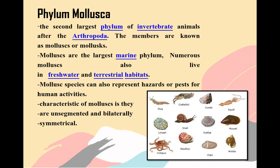The third type of phylum is Phylum Mollusca, the second largest phylum of invertebrate animals after the Arthropoda. The members are known as mollusks. Mollusks are the largest marine phylum. Numerous mollusks also live in freshwater and terrestrial habitats such as forests, grasslands, deserts, shorelines, and wetlands. Mollusk species can also represent hazards or pests for human activities. Their characteristic is they are unsegmented and bilaterally symmetrical. Examples include slug, cuttlefish, oyster, squid, limpet, snail, scallop, mussel, octopus, nautilus, clam, and winkle.